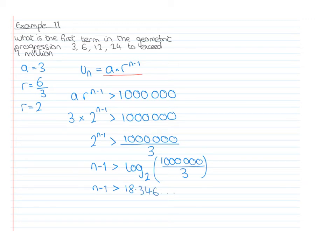Therefore N must be greater than 19.34. We know N must be an integer because it's a term number, so it's got to be greater than 19.34. Therefore the first term is N equals 20.